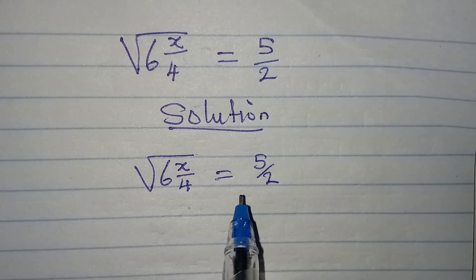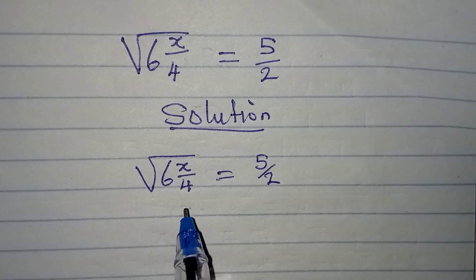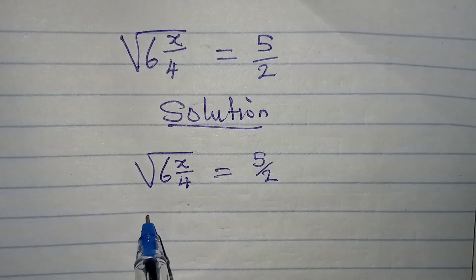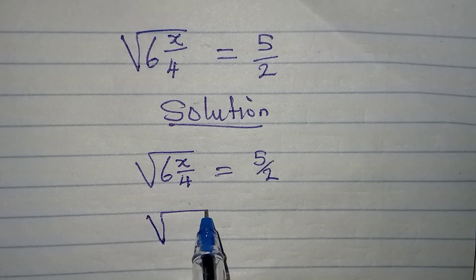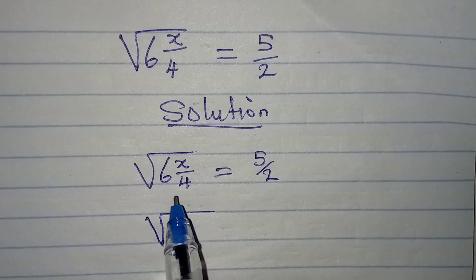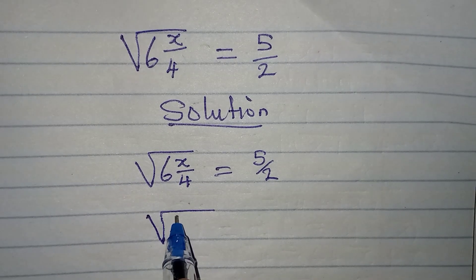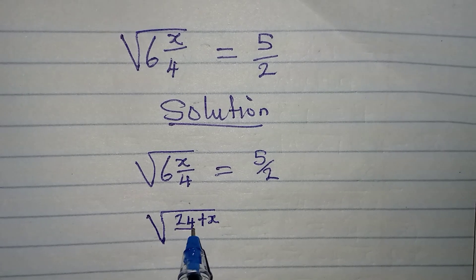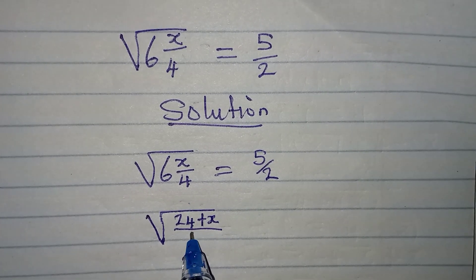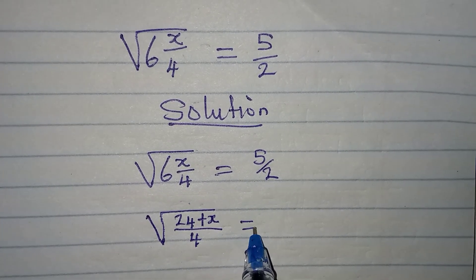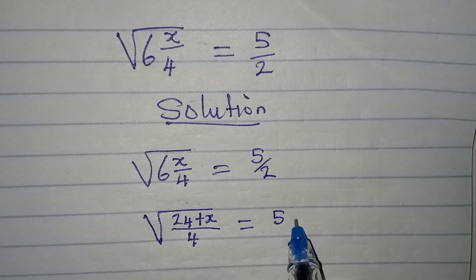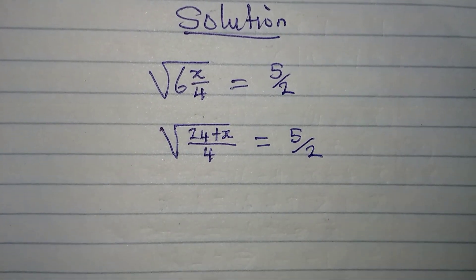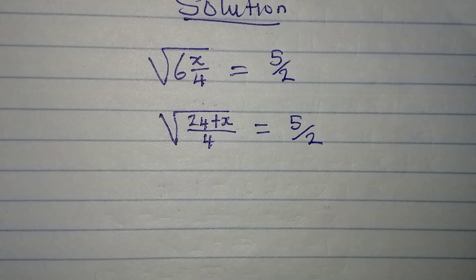First, convert this to improper form so that you will have square root of 4 times 6 is 24 plus x. You have 24 plus x as the numerator, then the denominator becomes 4, and this will be equal to 5 over 2.